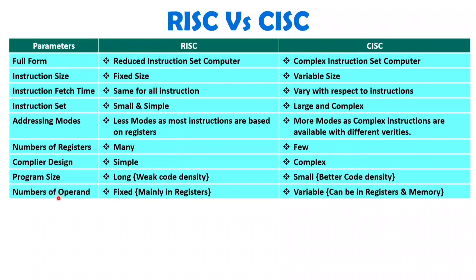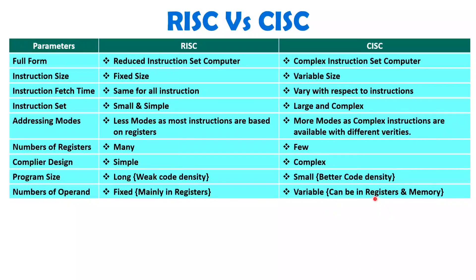When we talk about number of operands, it is fixed with RISC architecture and mainly in registers only, because most instructions are register-based and load/store is the memory access model. One operand will be a register, and a second operand could be memory, but the number of operands is fixed. With CISC architecture, operands vary with respect to instructions — it can be a register or it can be memory. For simple instructions you may have registers as operands, but for complex instructions you may have both registers and memory as operands.